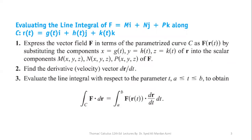In the second step, we calculate the derivative dr over dt. After calculating the derivative, we calculate the dot product of F with dr over dt. Then we integrate the resulting product F(r(t)) dot dr/dt for the given limits a to b.